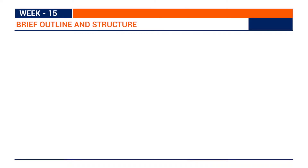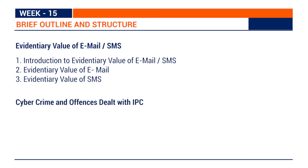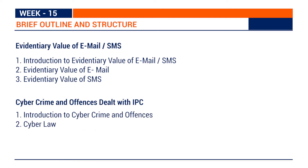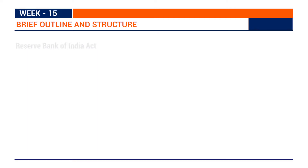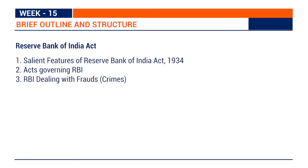The course structure begins with evidentiary values of email and SMS, covering an introductory part, evidentiary value of email, and evidentiary value of SMS. Second, cyber crimes and offenses dealt with IPC, including an introduction and the Indian Penal Code Act in India. Next is the Reserve Bank of India Act, covering its salient features, acts governing RBI, and RBI's dealing with frauds and crimes.